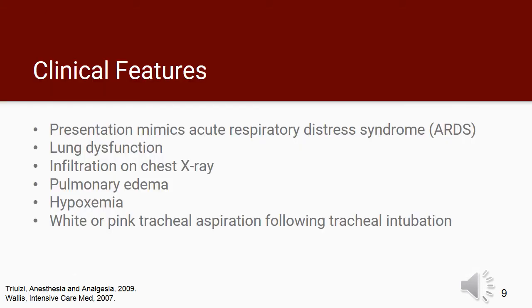When TRALI occurs, lung function typically decreases within two hours after receiving a transfusion that is rich in plasma. The onset of TRALI is similar to acute respiratory distress syndrome. There are clinical signs of pulmonary edema present, and the patient's x-ray shows a nodular infiltration or bat's wing pattern of edema, also seen in ARDS from other causes. Hypoxemia will also be evident. If the patient is intubated, their aspiration will be visibly white or pink.